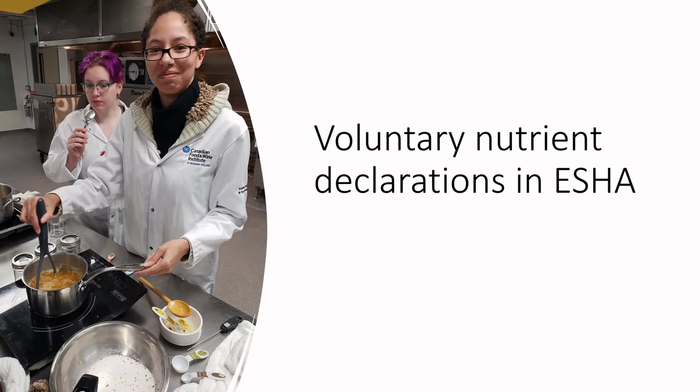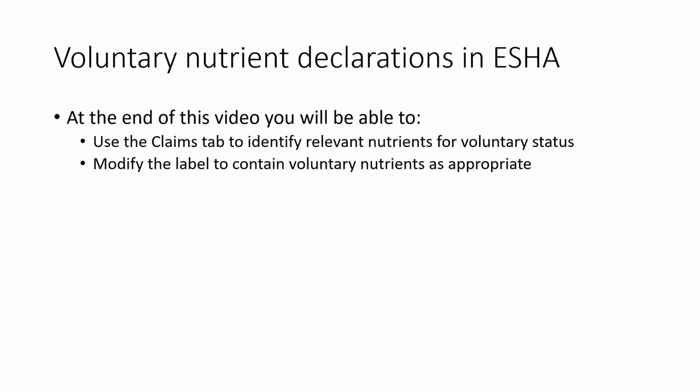And also, how do we know what's worthwhile? At the end of this video you will be able to use the claims tab in Esha to identify relevant nutrients for voluntary status, and then modify the label to contain voluntary nutrients as appropriate. Just because a nutrient is there doesn't necessarily mean you want to declare it, but in some cases it doesn't show up in your nutrition facts table and you should declare it because it is useful from a marketing and advertising perspective.